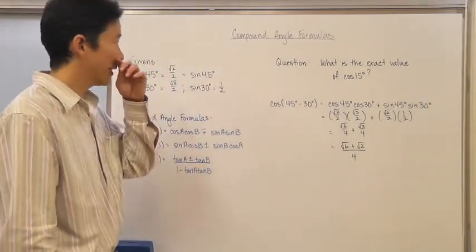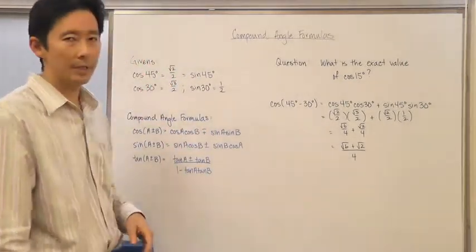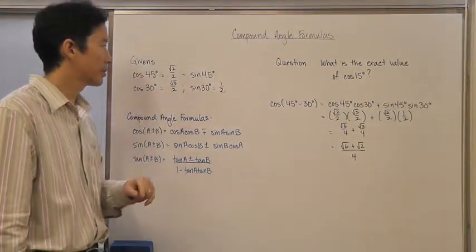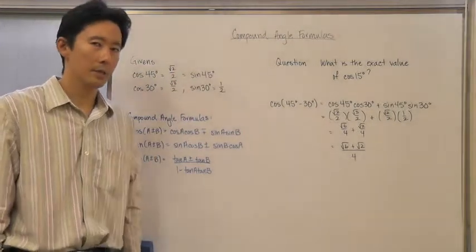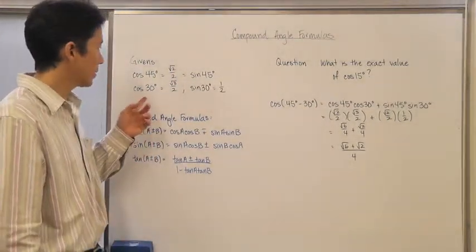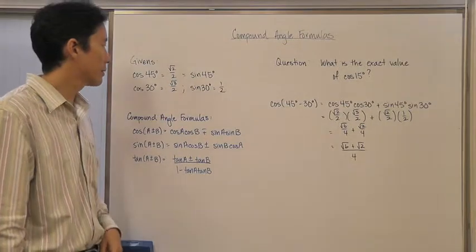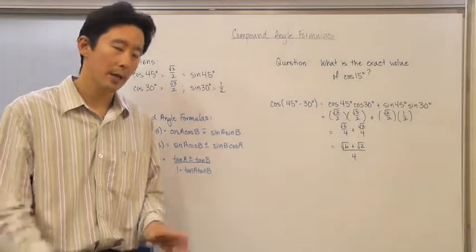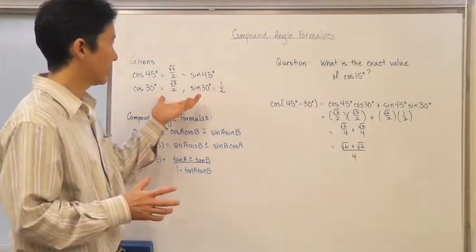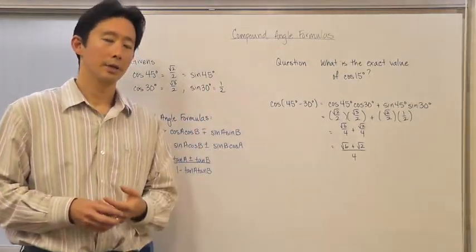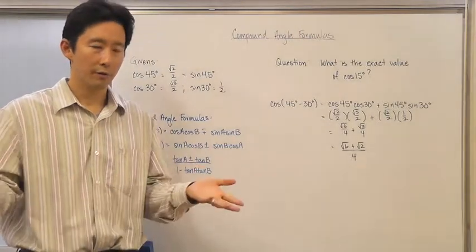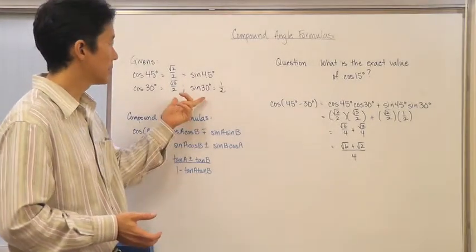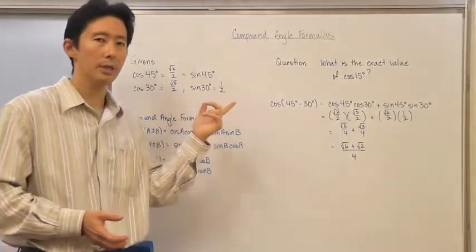Let's take a look at a couple of givens. We know that the cosine of 45 degrees is the square root of 2 over 2, which is exactly the same as the sine of 45 degrees. We also know that the cosine of 30 degrees is the square root of 3 over 2, and the sine of 30 degrees is 1 half. These values are determined from the 45-45 and 30-60 right triangles, and we know they are exact.